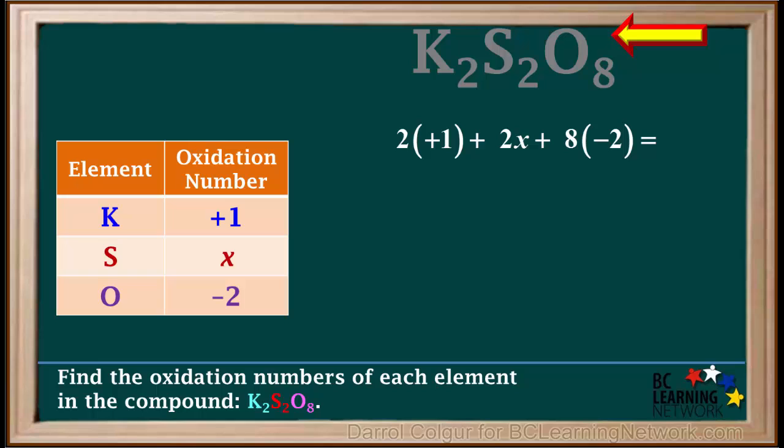Because there is no ionic charge written on the top right of this formula, the charges on all of the atoms add up to 0. To find the oxidation number of sulfur, we can now solve this equation for X.